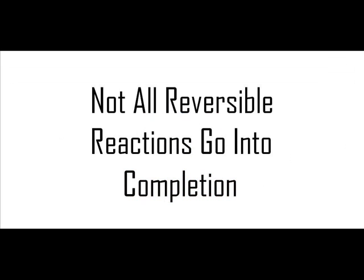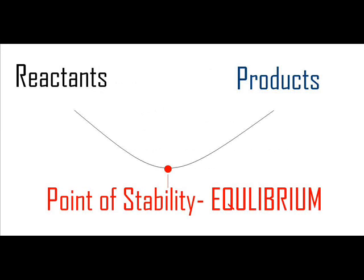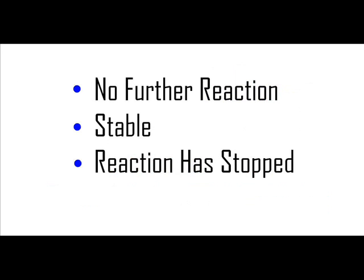Now, reversible reactions do not go to completion. Rather, they reach a point of stability, chemically known as equilibrium. When a reaction is at equilibrium, there is no longer any change in the reactants or products. The reaction has come to a complete stop.